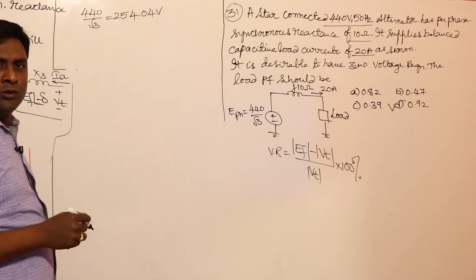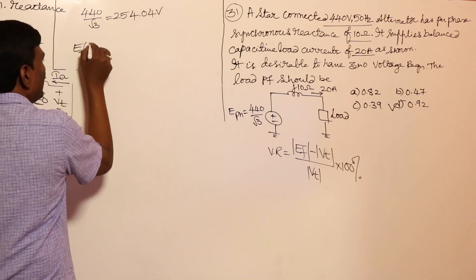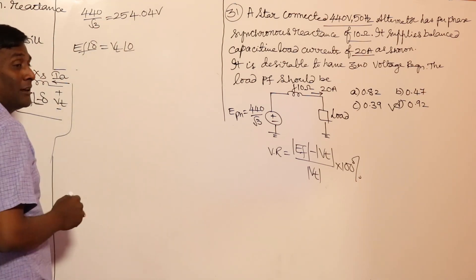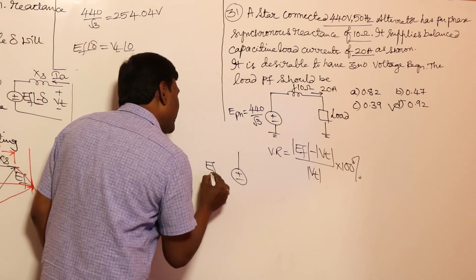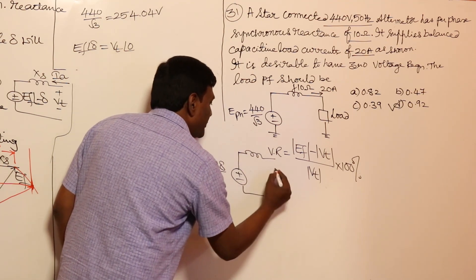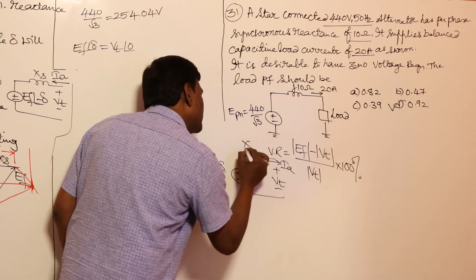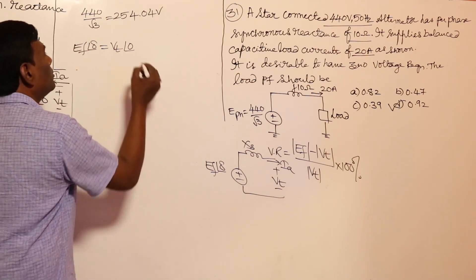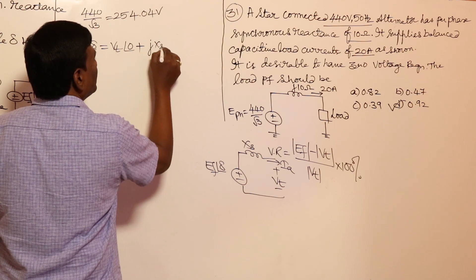Now write the equation: EF at angle delta equals VT at angle 0 plus j·Xs·IA at angle phi. Since it's a generator model: EF should lead with respect to VT, and VT plus the drop gives EF. So plus j·Xs·IA.